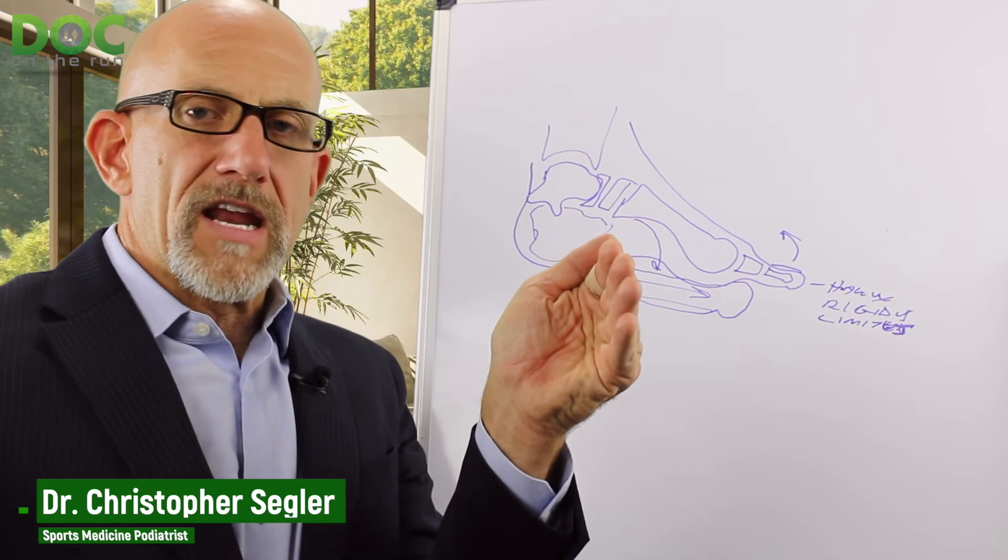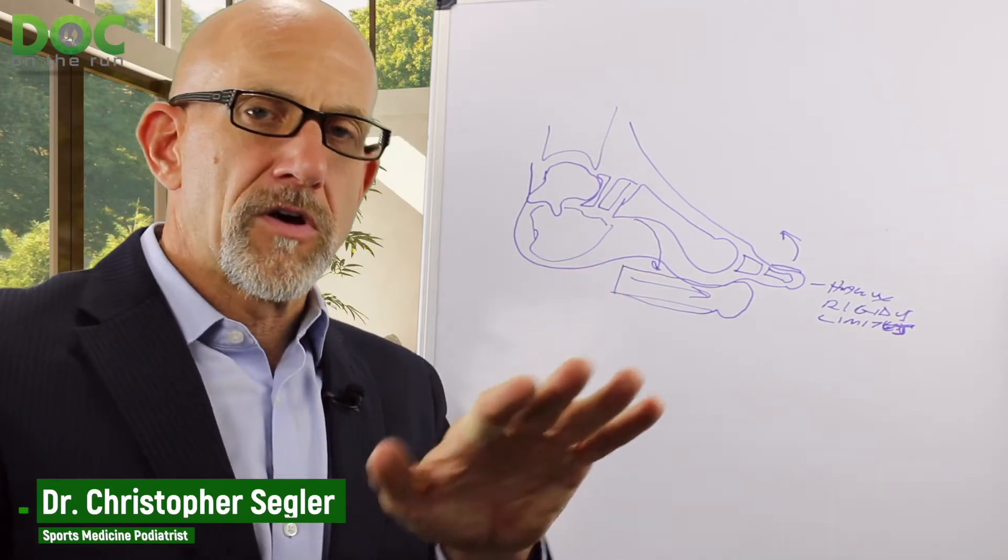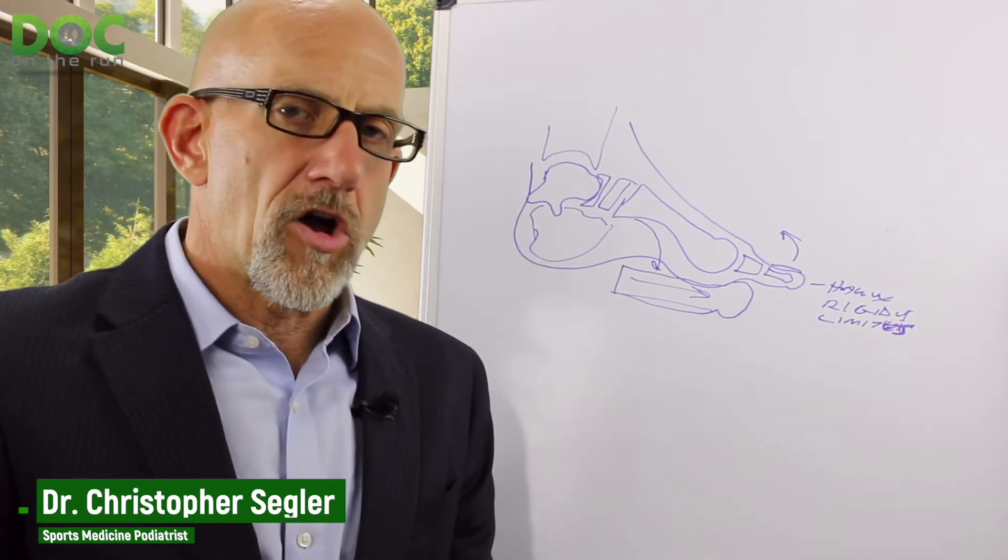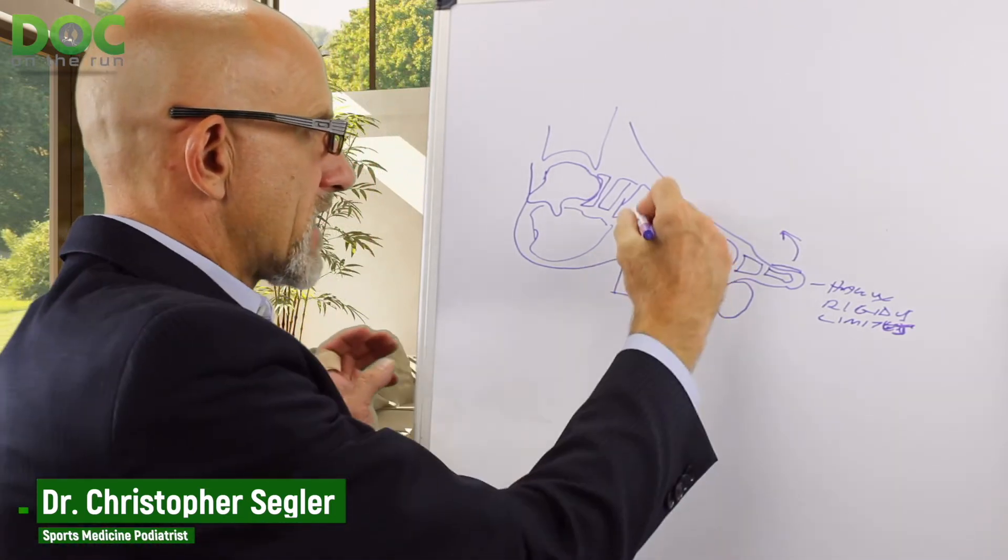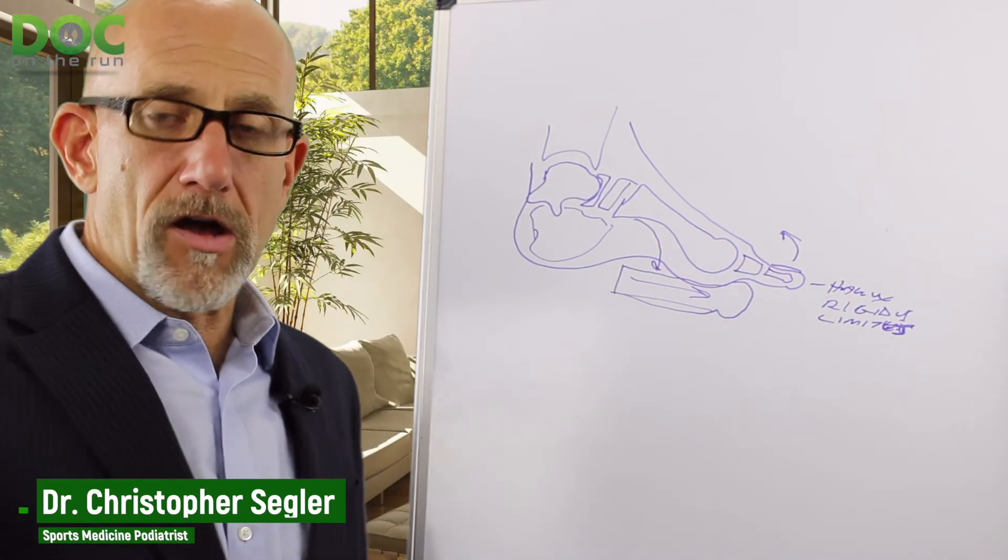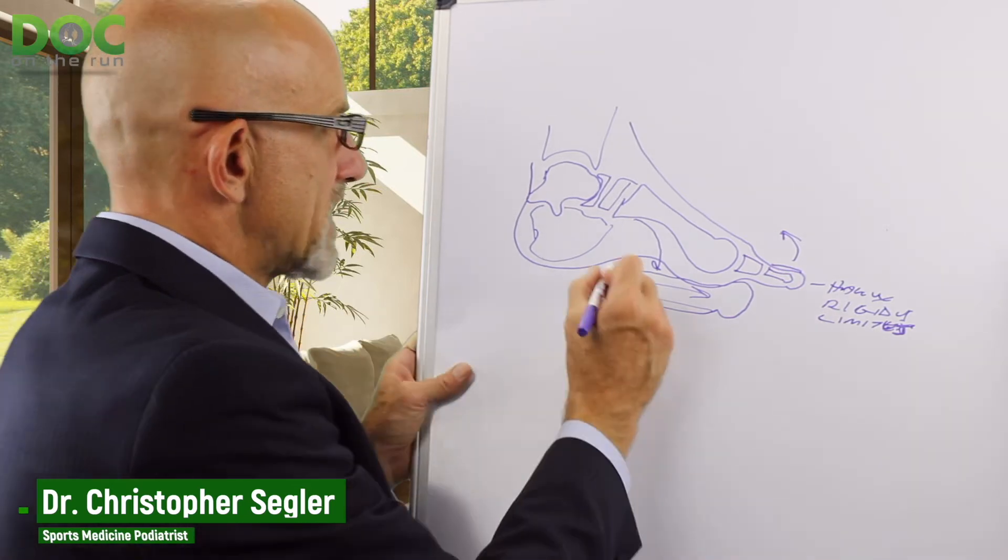So every time you pronate, if you're an over pronator and your foot looks pretty normal and you don't really have a long metatarsal, but every time your foot comes down to the ground and your arch height decreases, it pushes the big toe out away from your heel.